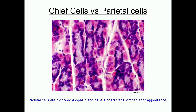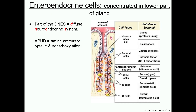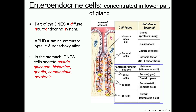A different H&E stain section accentuates the differences in color between the parietal cells and the basophilic chief cells. There are also a number of enteroendocrine cells in the gastric epithelium. These cells are part of the diffuse neuroendocrine system, and are also sometimes referred to as APUD cells. There are a number of products produced by gastric cells, including gastrin, histamine, somatostatin, serotonin, and ghrelin. These hormones regulate peristalsis, tract motility, secretion of digestive enzymes, water and electrolytes, as well as satiety. You don't need to know exactly which cells produce what hormone, but you should know the products.